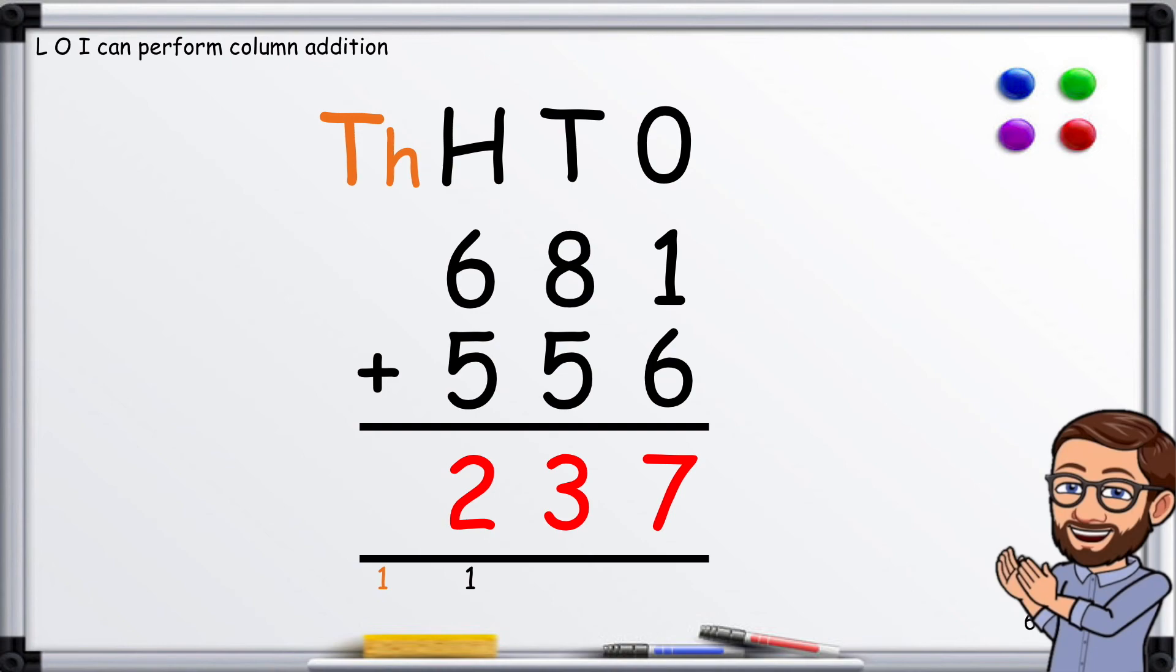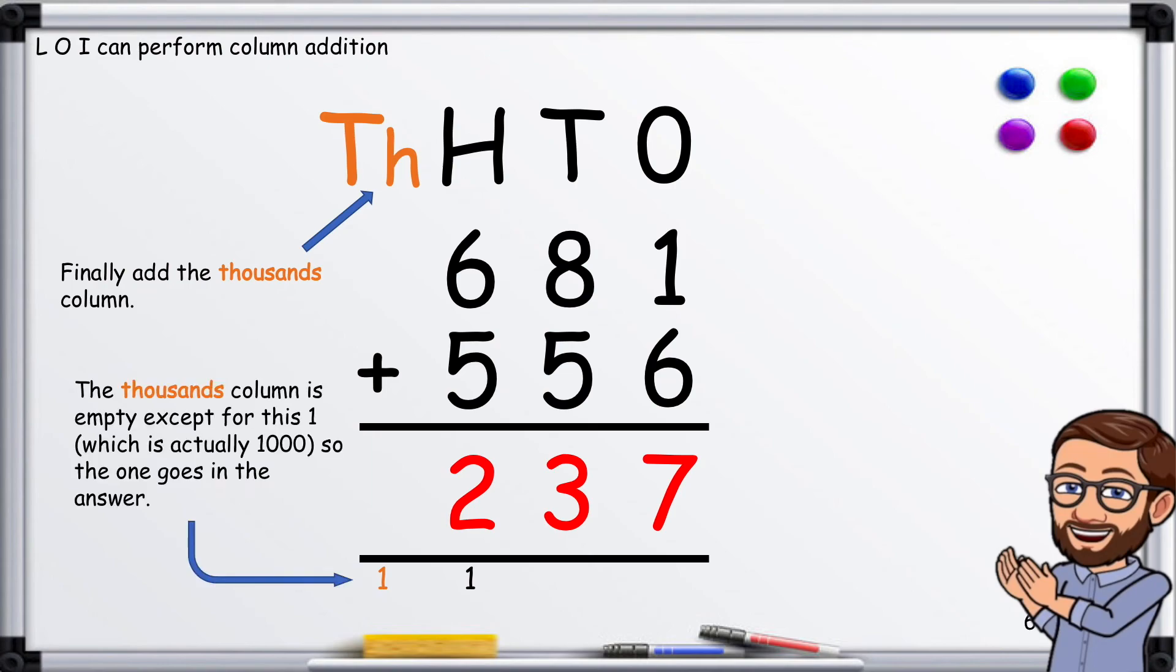There's nothing to add up in the thousands column, so we bring the 1 that we carried up to the thousands column. And there we have our answer: 1,237.